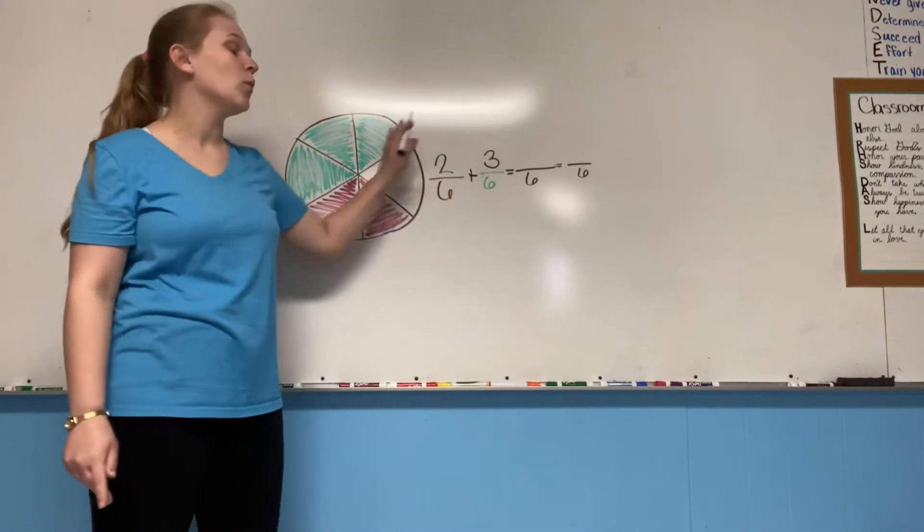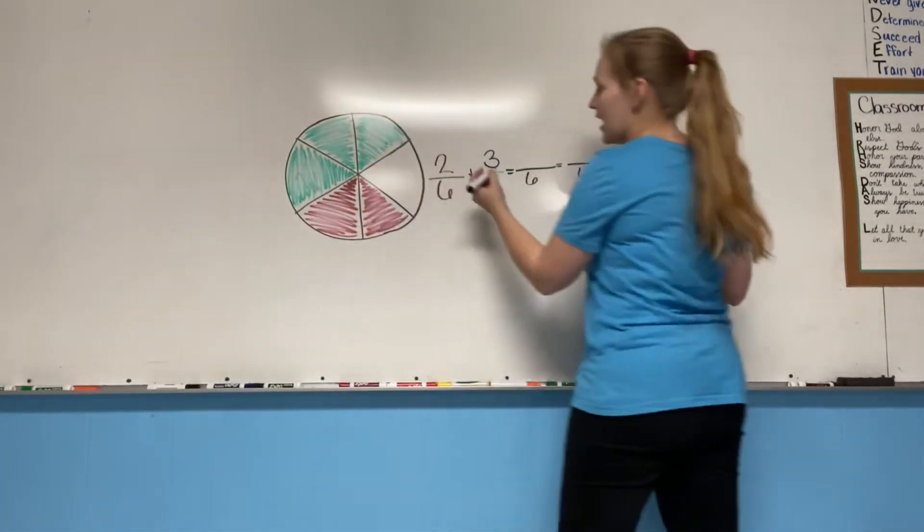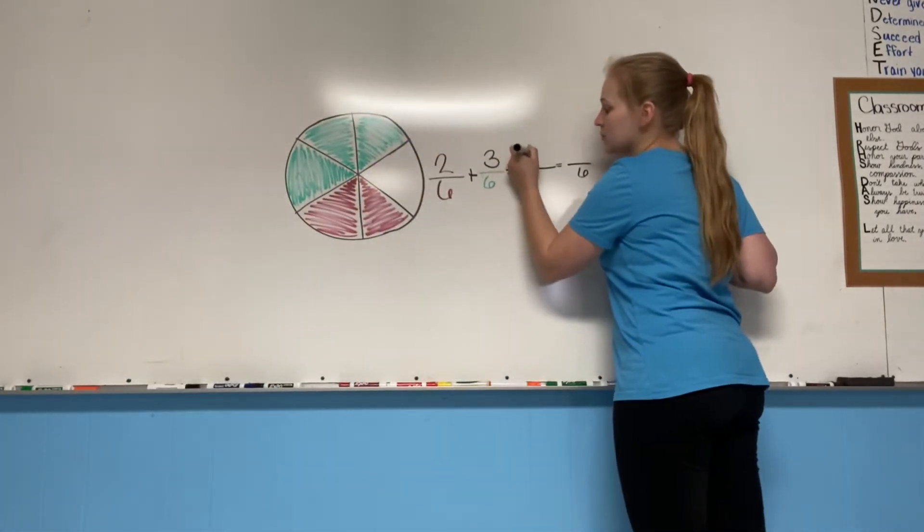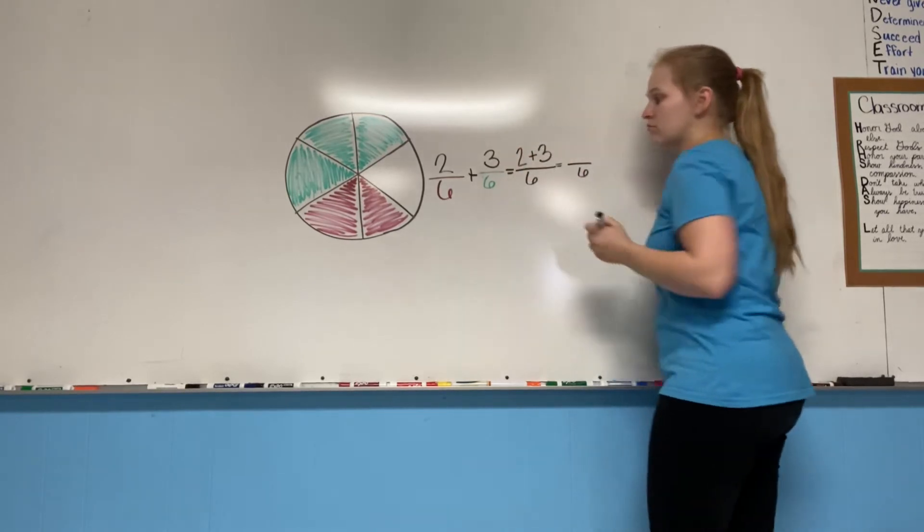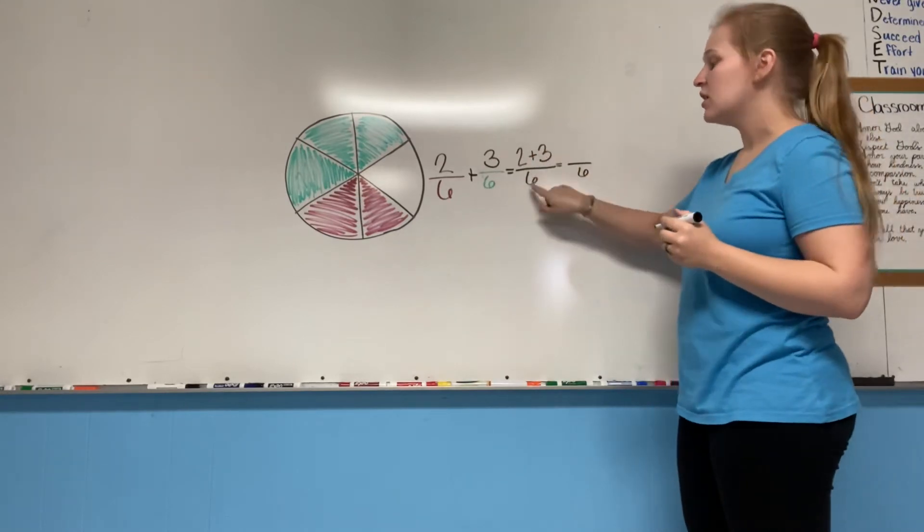So basically all we're going to have to do when you're adding fractions that have the same denominator, you just add the numerator like this. Kind of like this, where you would just look at this plus this. Two plus three sixths.